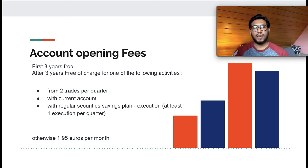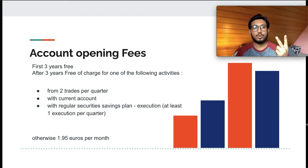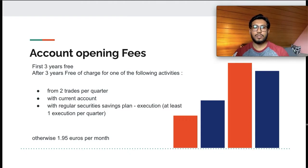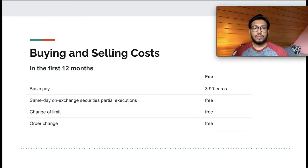After the first three years, it remains free under certain conditions — for example, if you perform two trades per quarter with them, or have a current account with Comdirect, or if you have at least one savings plan with them which is executed once per quarter. Otherwise it's going to be €1.95 per month.